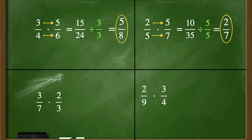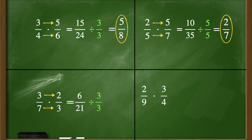Now let's try three-sevenths times two-thirds. I'm going to multiply those numerators — three times two is six. Then multiply the denominators — seven times three is twenty-one. I'm going to decide whether six and twenty-one share any common factors, and they do: they share a factor of three. So six divided by three is two, and twenty-one divided by three is seven. My final answer to three-sevenths times two-thirds is two-sevenths.